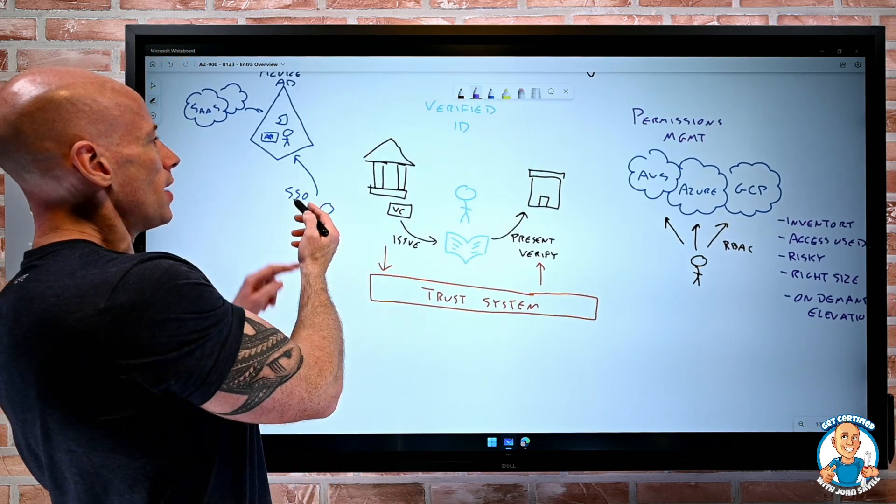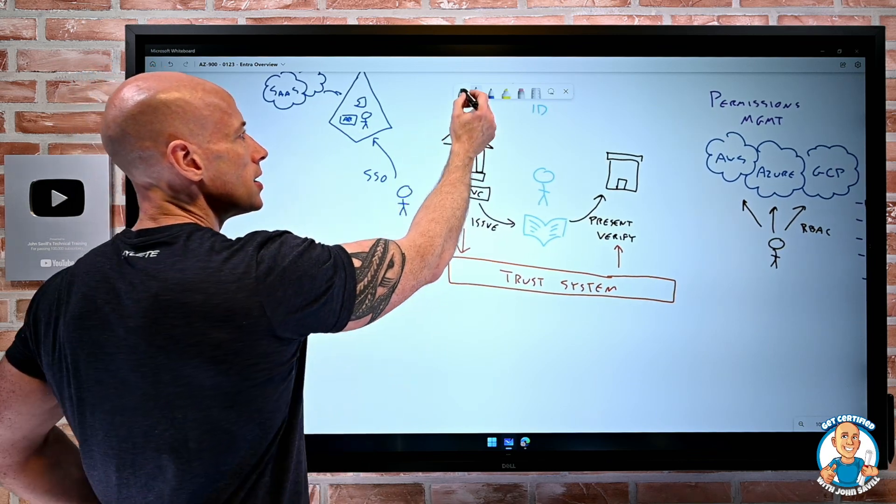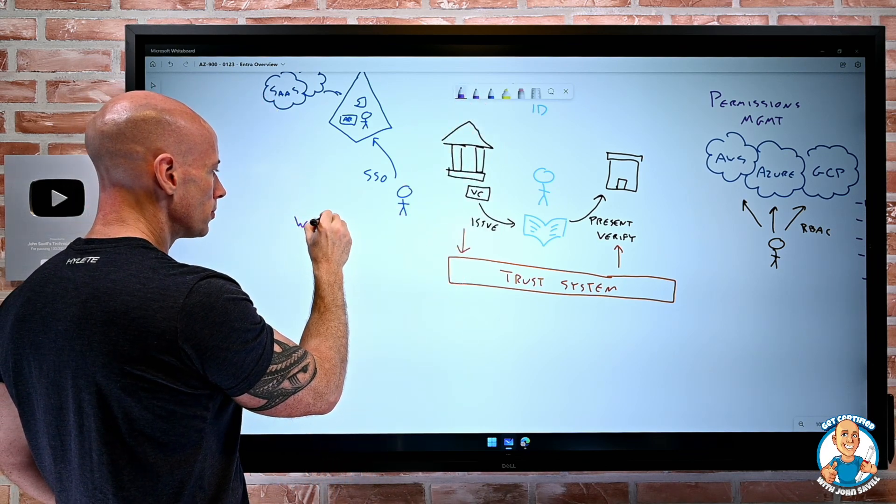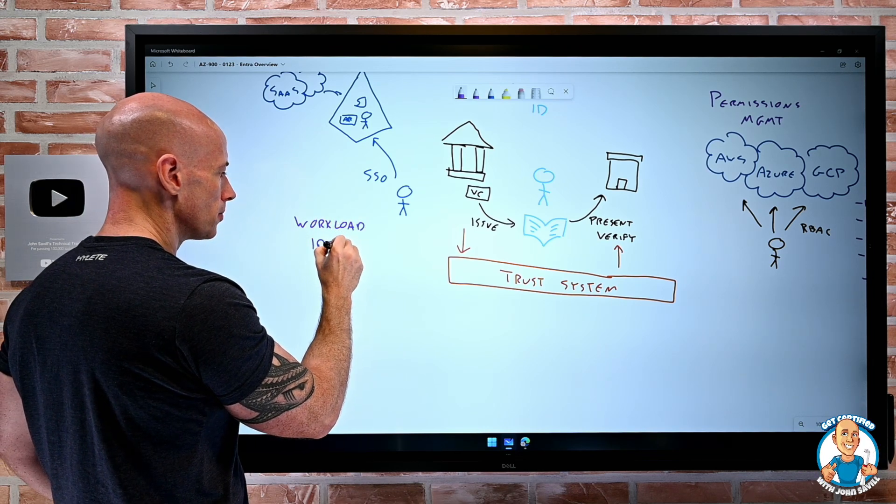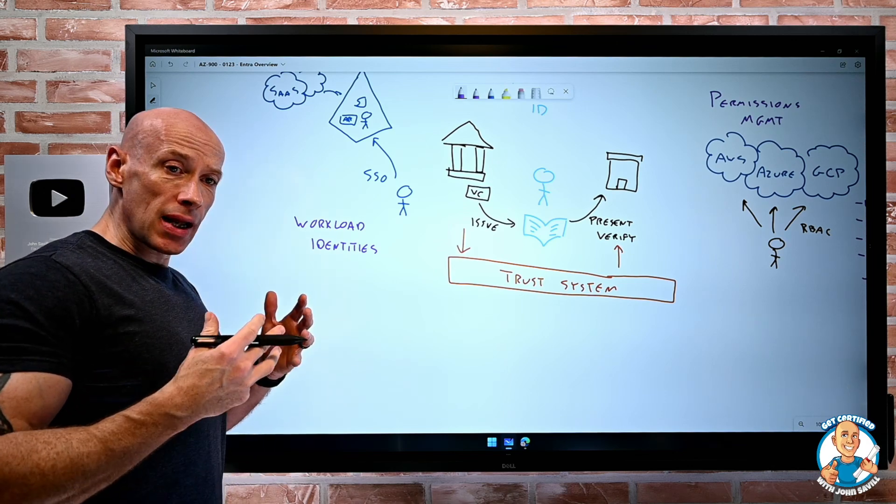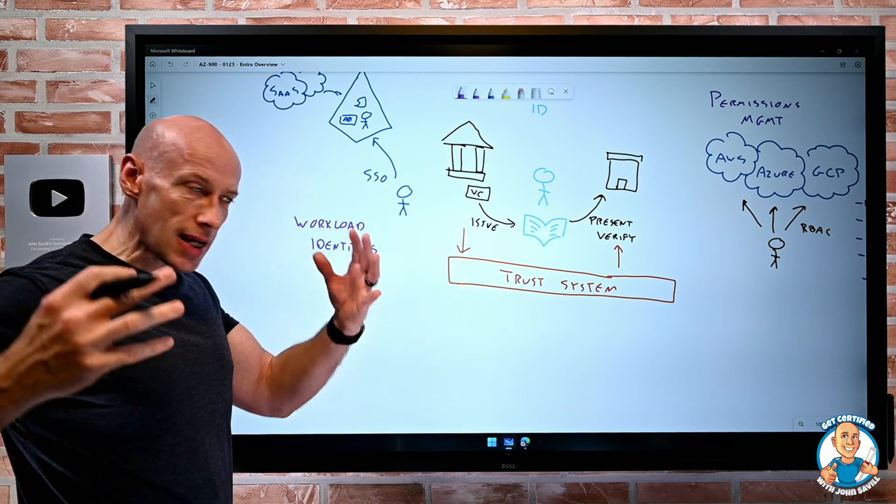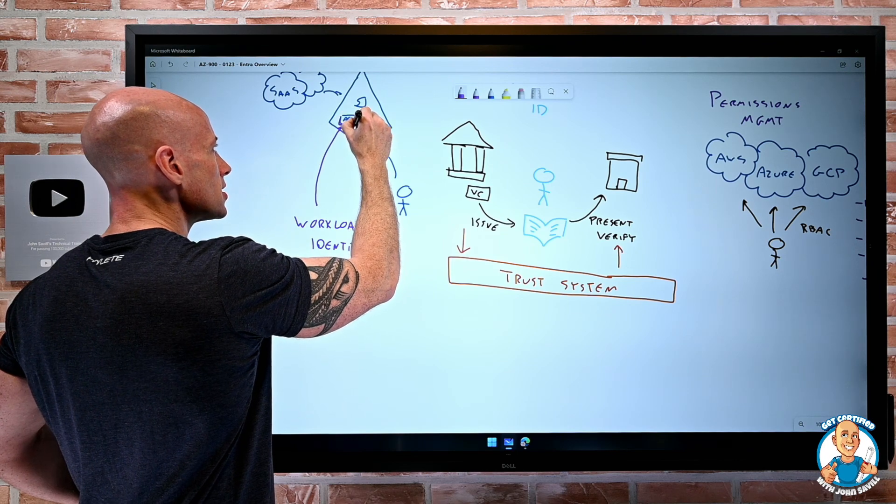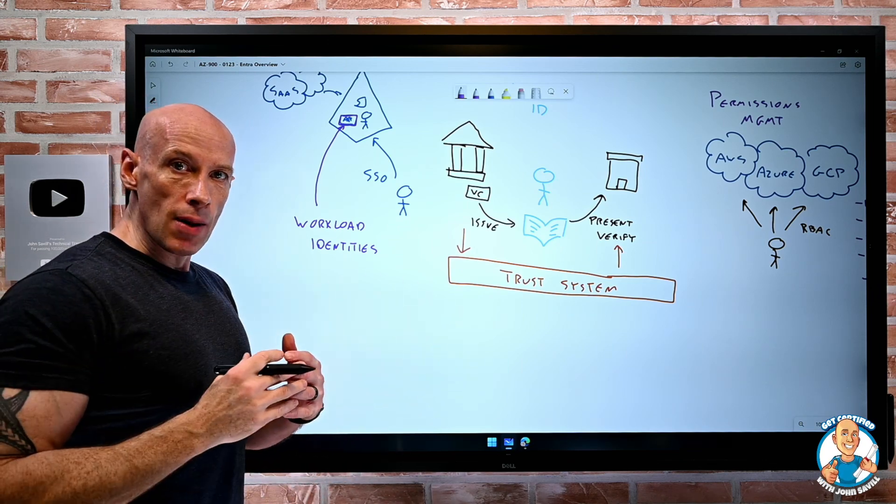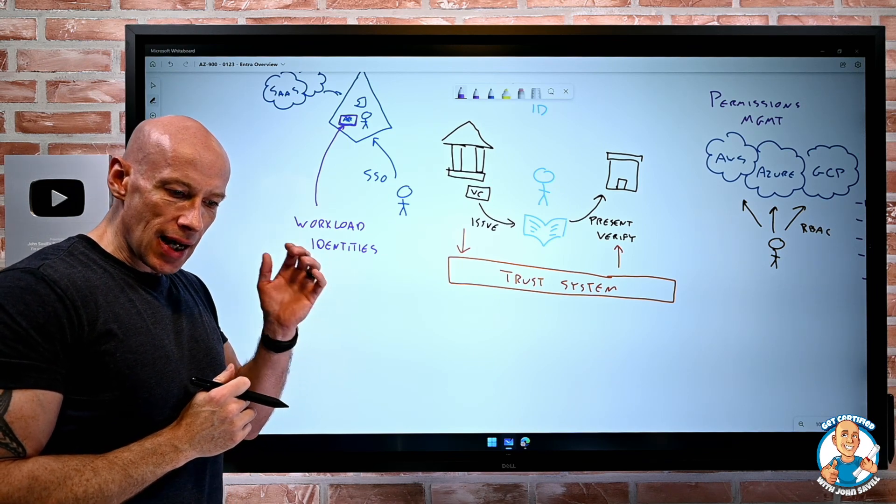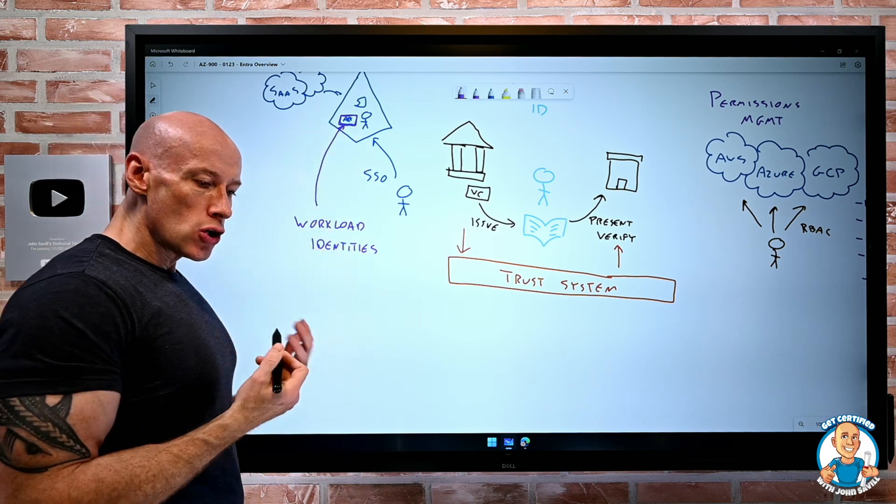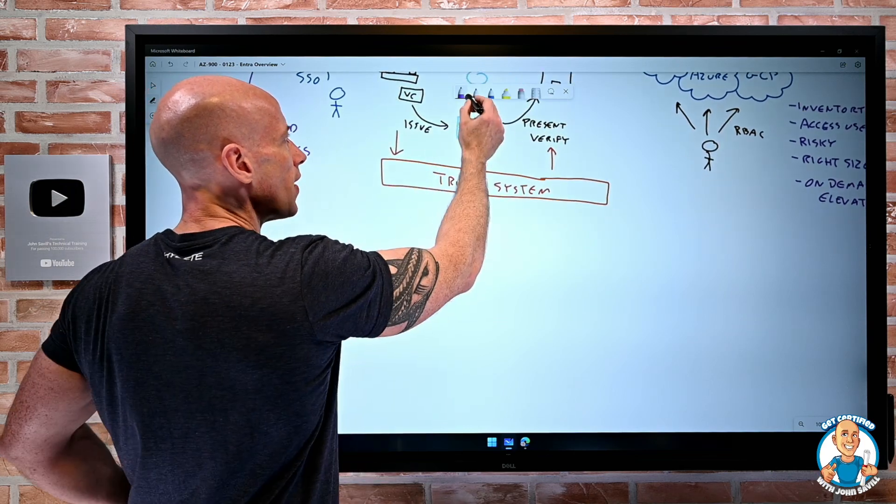And I mentioned this idea of applications have identities in there as well. And so one of the other big areas of functionality is around this idea of those workload identities. I have a service principal. I have a managed identity for an Azure resource. But they typically have fairly high privileges because they're doing maybe important tasks that need higher sets of permissions. And so when I think about these workload identities, I still have requirements around their security, maybe alerts around what's happening to them. So workload identities brings together capabilities around conditional access, around identity protection, access reviews, logging, for these identities that are not used by some human being.